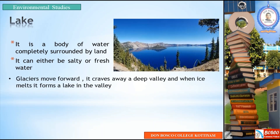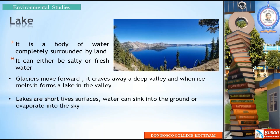When glaciers move forward, they carve away a deep valley. When the ice melts, it forms a lake in the valley. Lakes are short-lived — water can sink into the ground or evaporate into the sky.